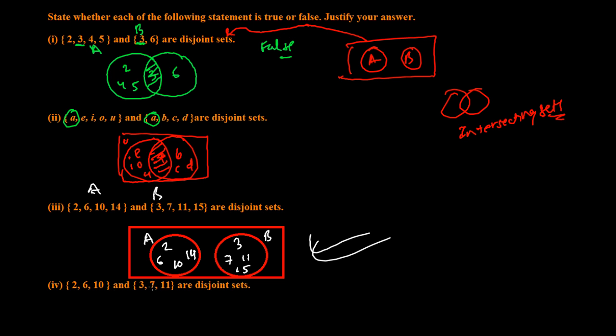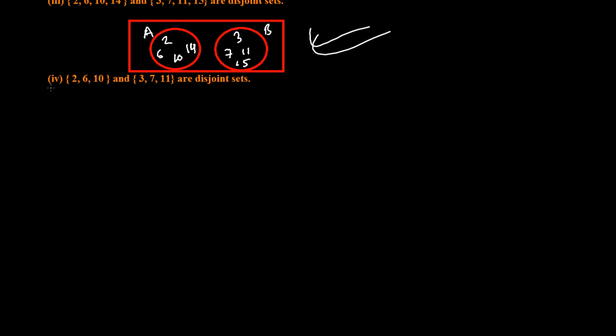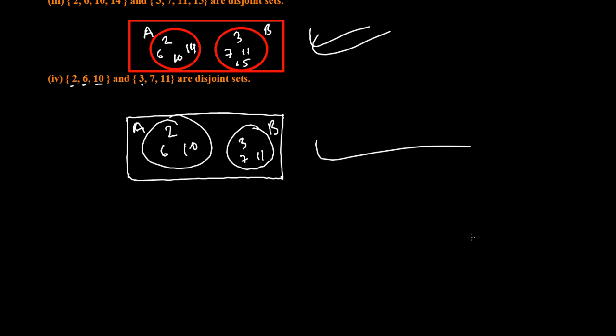{2, 6, 10} and {3, 7, 11}. Again, yes. Again, we get another Disjoint Set because 2, 6, 10 - these are even, 3, 7, 11 - these are odd, and nothing is common between them. This is again Disjoint Sets. This is my set A carrying elements 2, 6, and 10, and this is my set B carrying elements 3, 7, and 11. This is Disjoint Sets.